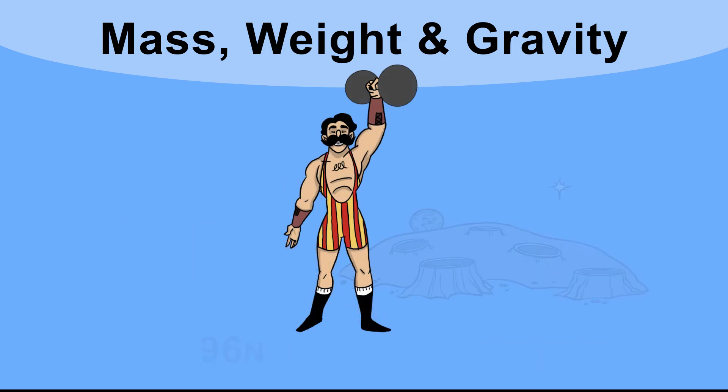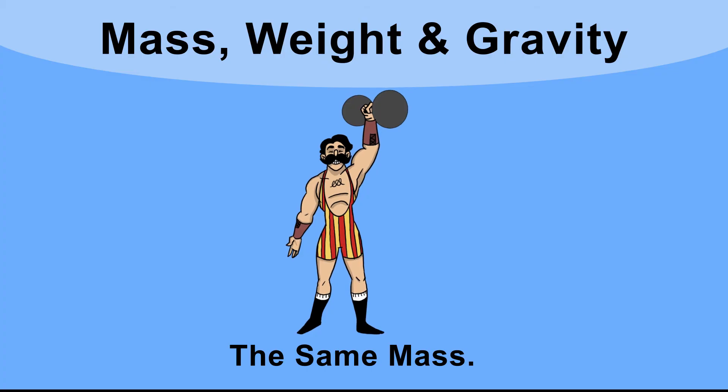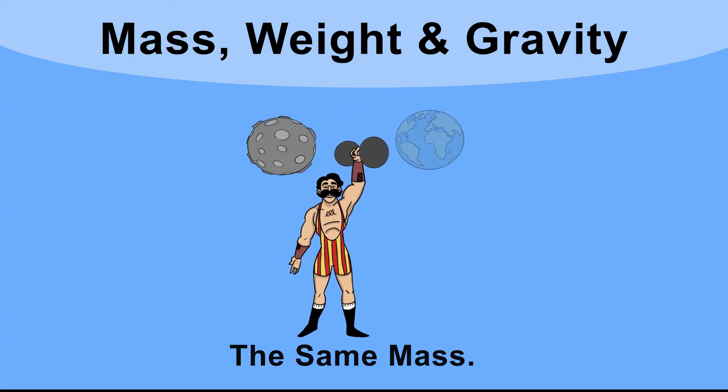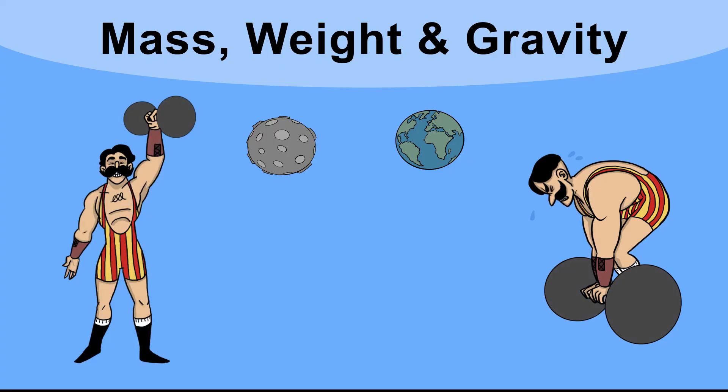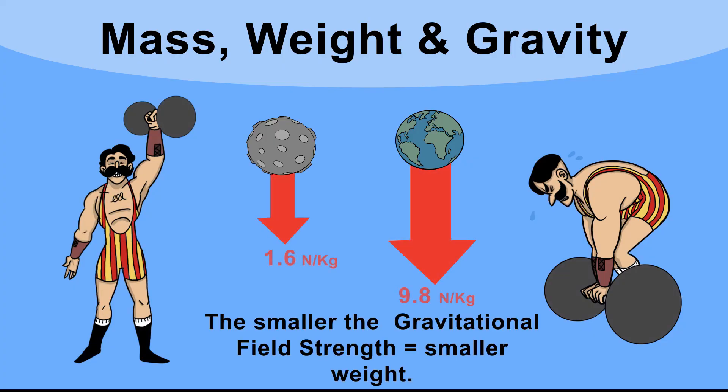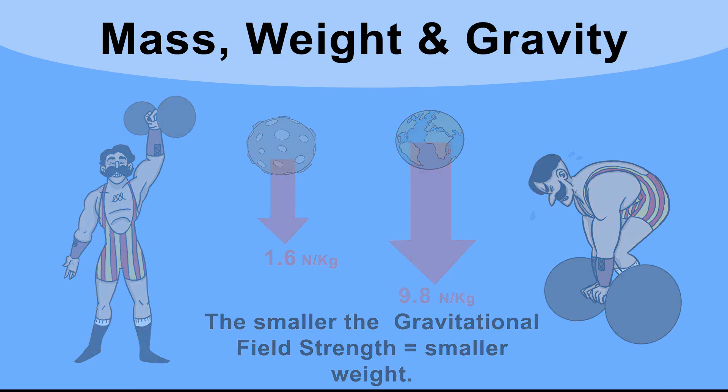Even though the dumbbell has the same mass—it's made of the same amount of metal on both the Moon and Earth—it's much easier to pick up on the Moon, as the gravitational field strength there is much less, and therefore the weight is also much less.